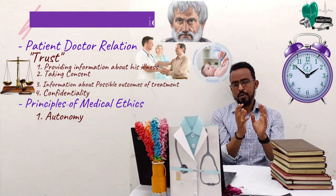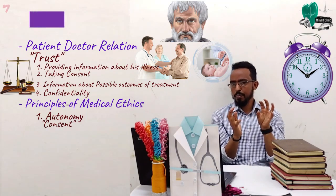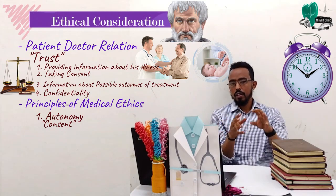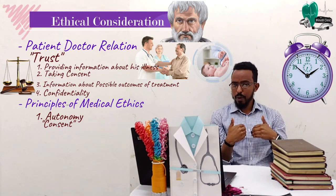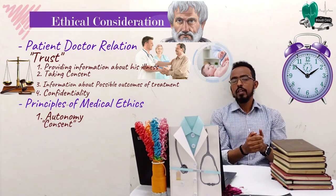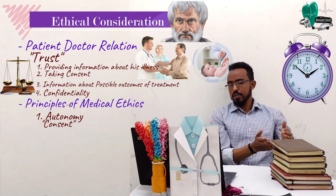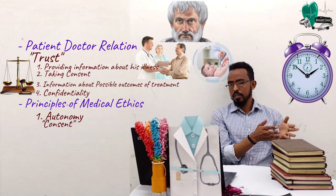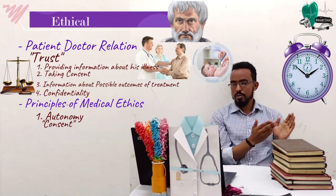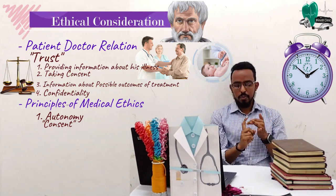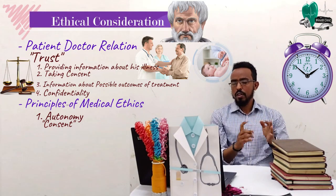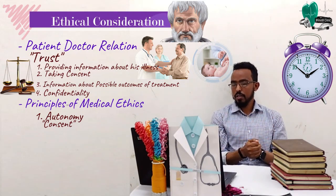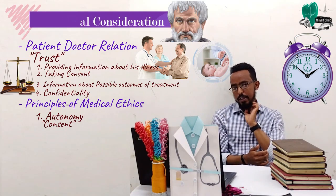Under autonomy, the most important concept is consent. Consent should always be informed consent, which means the patient should have adequate information before giving any consent. It should also be based on the patient's willingness to proceed. These apply to interventions, teaching, or research — when we do all these things on human subjects, we need to get the consent of the patient.